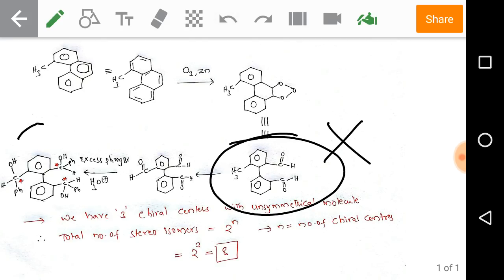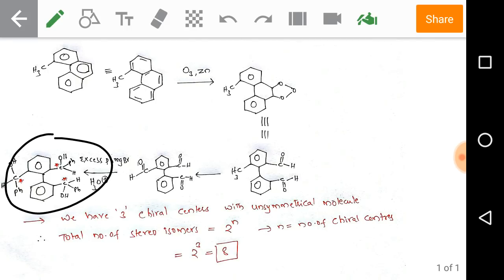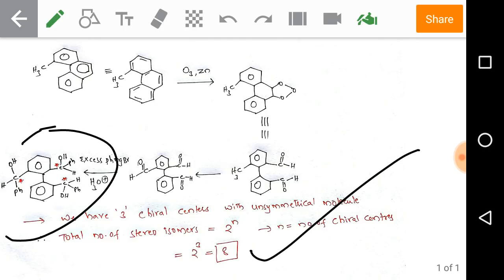Whenever we have three chiral centers with an unsymmetrical molecule—just look at this, this is an unsymmetrical molecule, there is no possibility of any symmetry on it—whenever we have that kind of unsymmetrical molecule with chiral centers, we have a total number of isomers equals to 2^n, where n indicates number of chiral centers. Hence, we have three chiral centers in the product, so we get 8 stereoisomers.